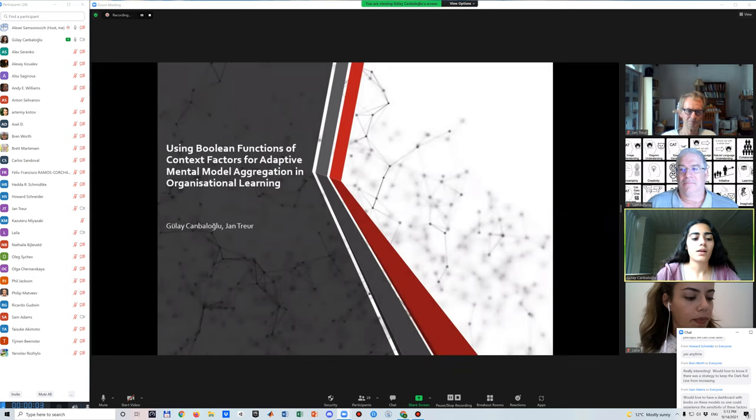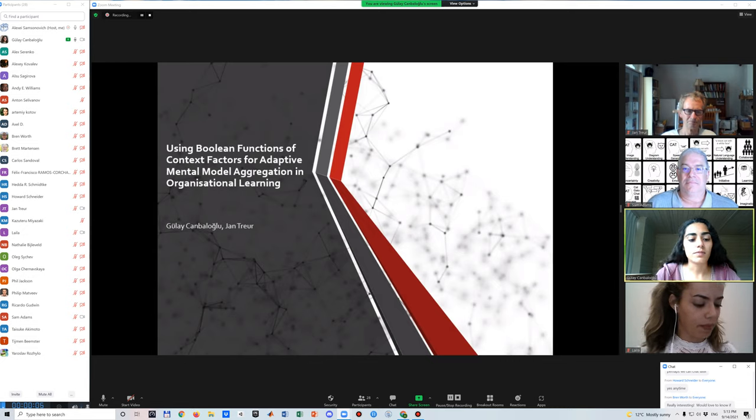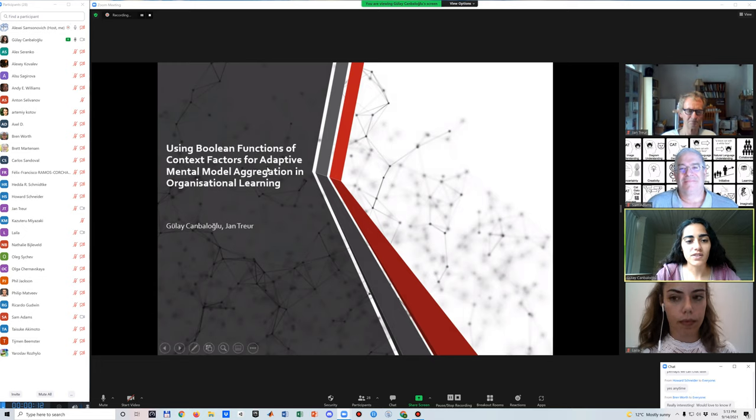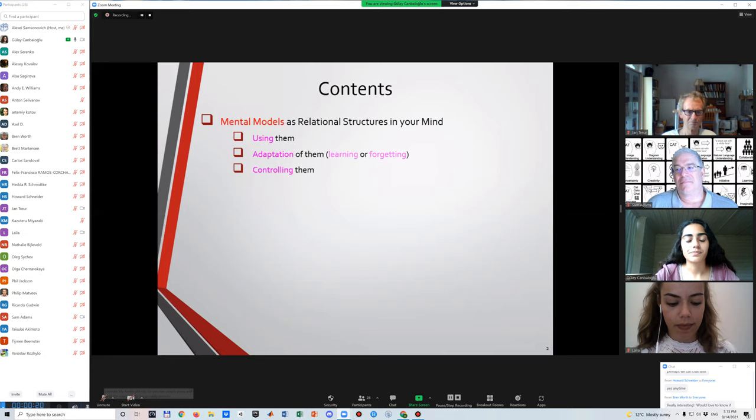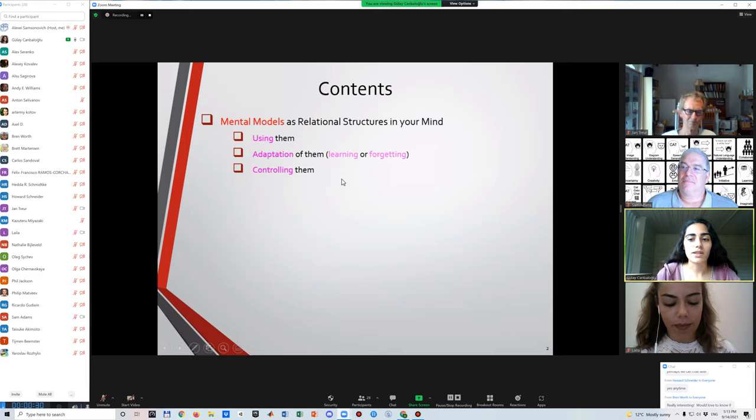Hello again, I'm Gülay and the paper that I'll present today is using Boolean functions of context factors for adaptive mental model aggregation in organizational learning. This is our second paper with Jan Trur and in the beginning, I will explain some common things as in the previous presentation. It will be like a memory refresher for those who listened to the previous one.